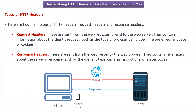There are two main types of HTTP headers. The first one is request headers, and the second one is response headers. Request headers are sent from the web browser to the web server and contain information about the client request, such as the type of browser being used, the preferred language, or cookies. Response headers are sent from the web server to the web browser and contain information about the server's response, like content type, caching instructions, or status codes.